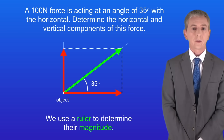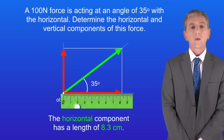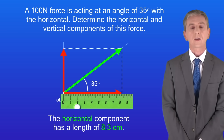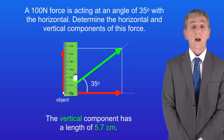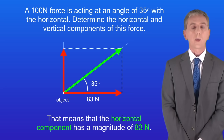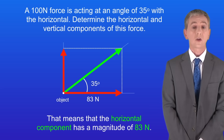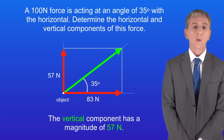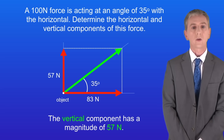Finally we use a ruler to determine their magnitude. The horizontal component has a length of 8.3 centimeters and the vertical component has a length of 5.7 centimeters. That means that the horizontal component has a magnitude of 83 newtons and the vertical component has a magnitude of 57 newtons.